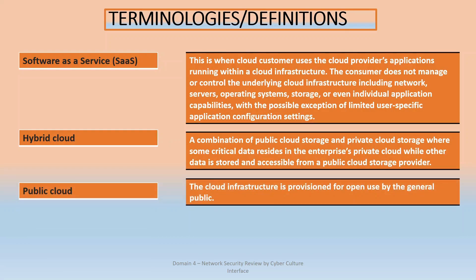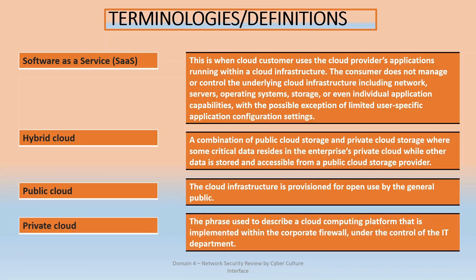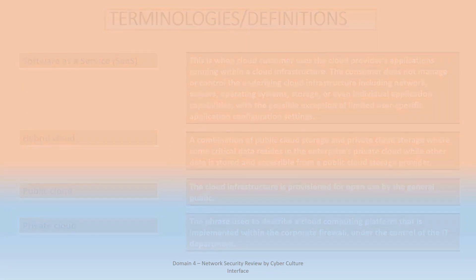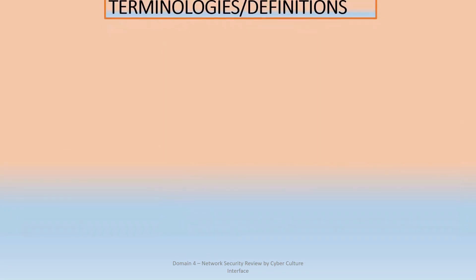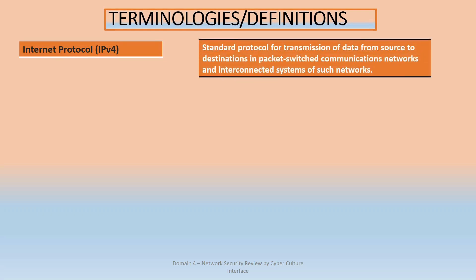A public cloud is a cloud infrastructure provisioned for open use by the general public. A private cloud is the opposite — it is cloud computing implemented within a corporate firewall and is exclusive to the organization that owns it.